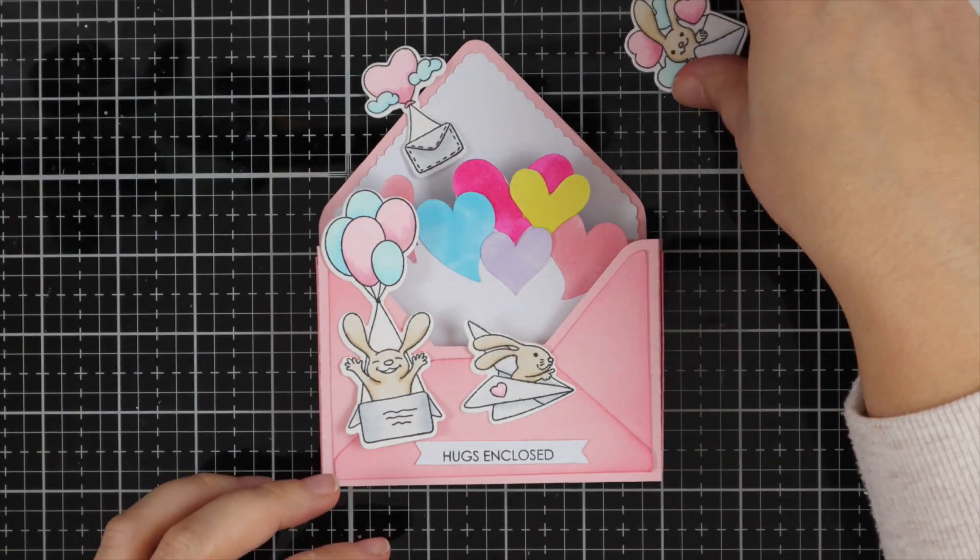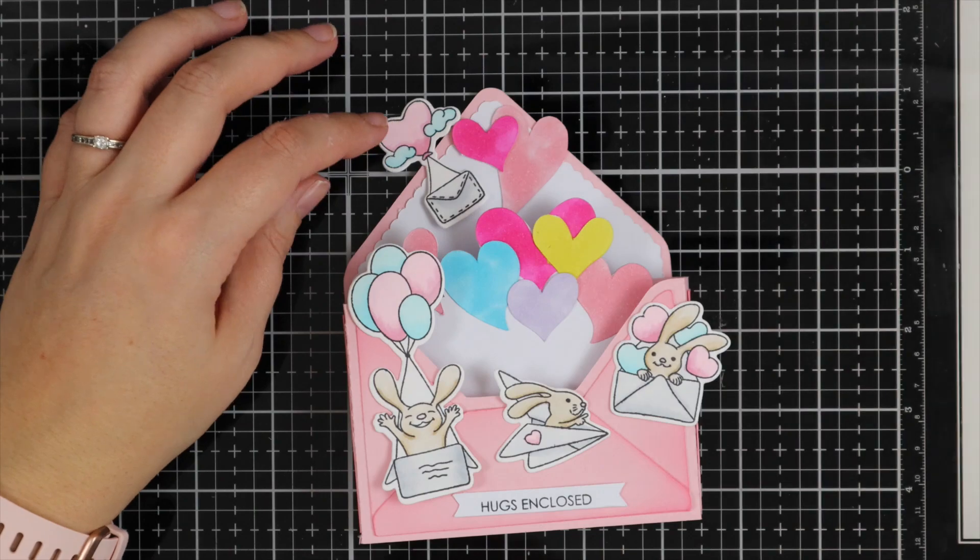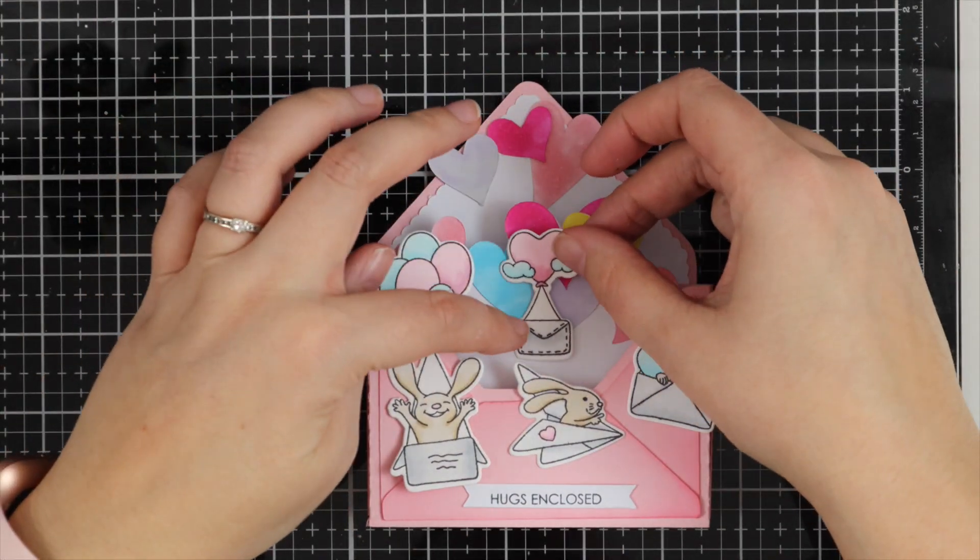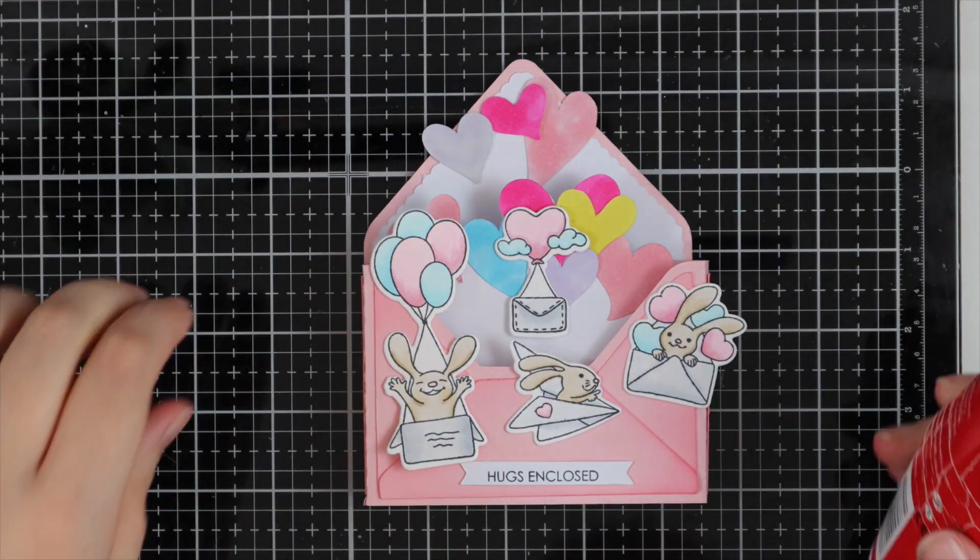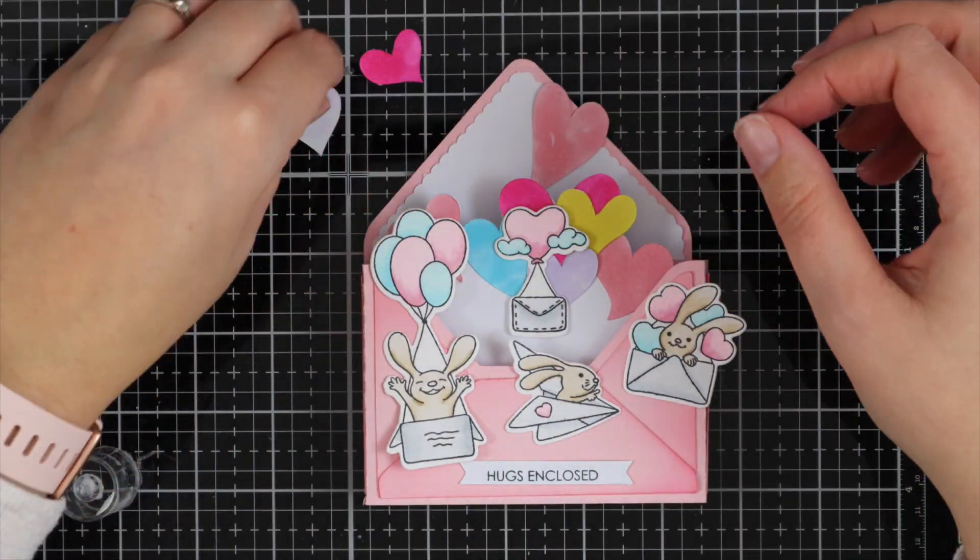So now I've got all my images that are colored and then my sentiment. I'm just planning where to put everything. So once I think I roughly know where I want everything to go, I'll then go back in with my PVA glue and start adhering these down.